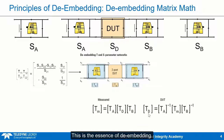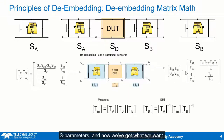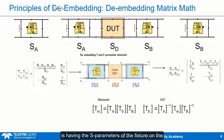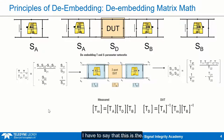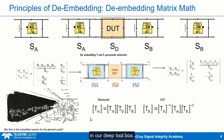This is the essence of de-embedding. Once we have the T-parameters of just the device under test, we go back and convert those into their S-parameters, and now we've got what we want — the S-parameters of just the device under test. The secret of making this possible is having the S-parameters of the fixture on the left side and the S-parameters of the fixture on the right side. If this seems complicated, don't worry — this is the simplified version. All of this takes place under the hood with one mouse click in our deep toolbox.